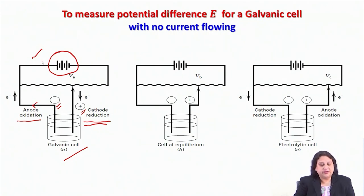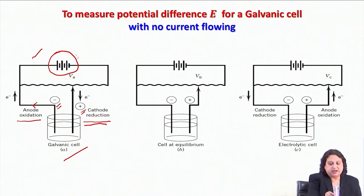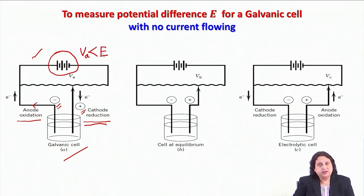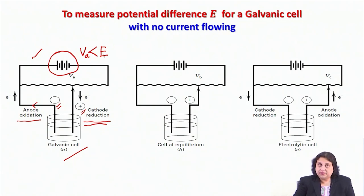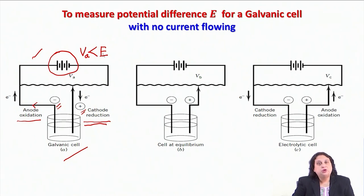The first situation is where the externally applied potential V_A is less than the cell potential E — that is, the difference in potential between the two electrodes. If the applied external voltage is less than E, it is still possible for the galvanic cell to drive electrons through the external circuit, which would correspond to the chemical reaction taking place spontaneously within the cell.